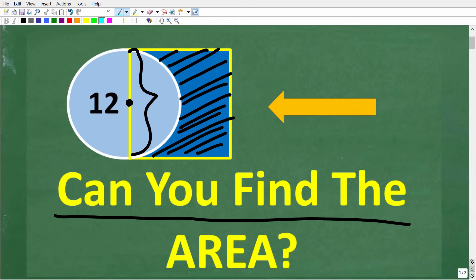So one more time, we have this square that overlaps this circle. Again, this side of the square runs through the center of the circle, and this distance right here is 12. So let's see exactly how to solve this problem.